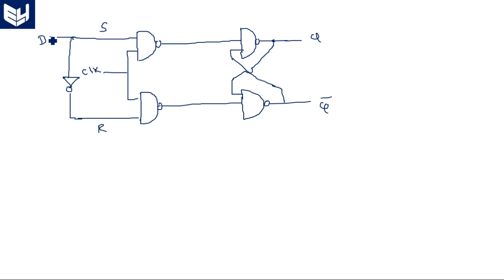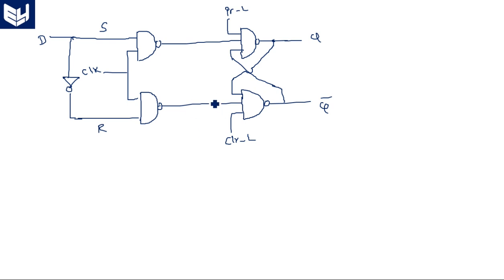We modify the SR flip-flop by interconnecting the S and R pins through an inverter. If D equals 0, internally S equals 0 and R equals 1. If D equals 1, then S equals 1 and R equals 0. This eliminates the forbidden state of SR. Additionally, preset and clear pins are connected directly to the latch, while the front two NAND gates perform controlling operations through the clock and input signals.